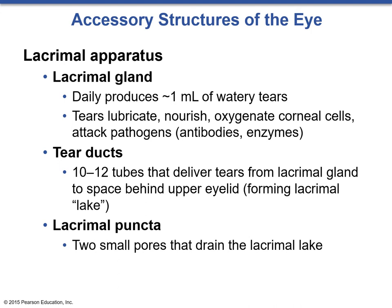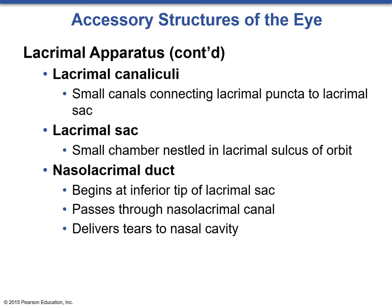Tears are also stimulated in abundance when you have an emotional response or an allergic reaction. Tear ducts carry the tears from the lacrimal gland out to the upper eyelid, forming the lacrimal lake. From there, we move into the lacrimal puncta, two small pores that drain the lacrimal lake. Tears then move across the eye towards the corner where they reach the lacrimal canaliculi — small canals connecting the lacrimal puncta to the lacrimal sac. The lacrimal sac is a small chamber nestled in the lacrimal sulcus of the orbit, and then drains to the nasolacrimal duct, which drains the tears through the nasal cavity.